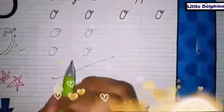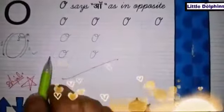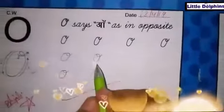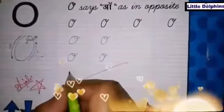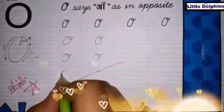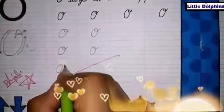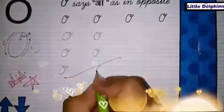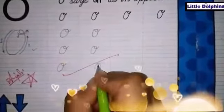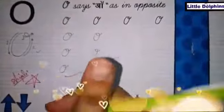So, this is letter O in cursive style. Try to make it. It can be slightly difficult for you to make these curved lines again and again, so practice on it and it will be good. Best of luck. Bye-bye.